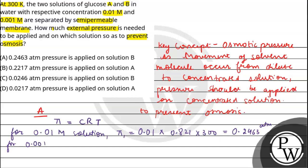Next, for 0.001 molar solution, π2 will be 0.001 multiply 0.821 multiply 300, that equals 0.02463 atmosphere.